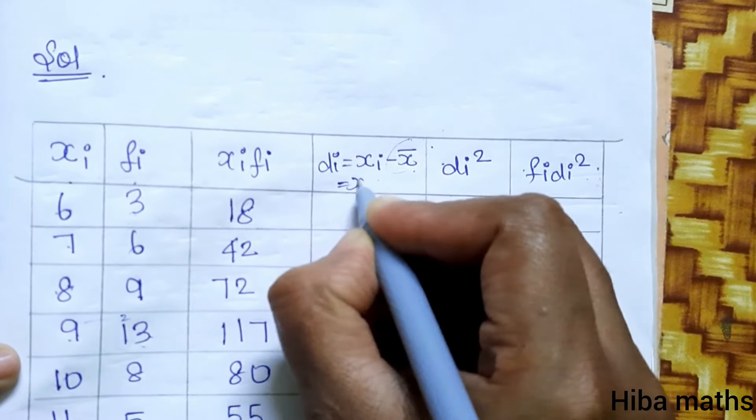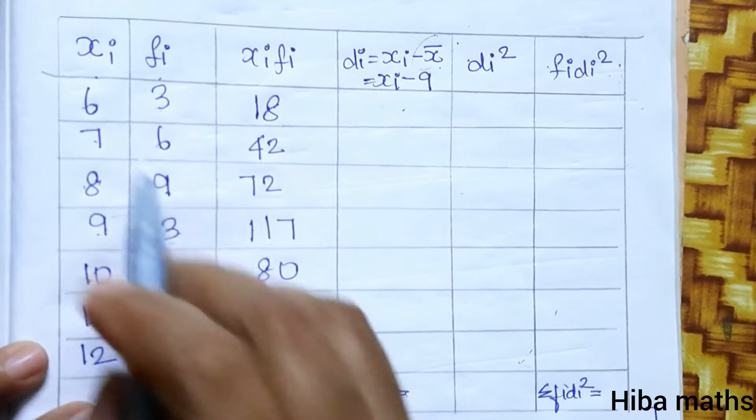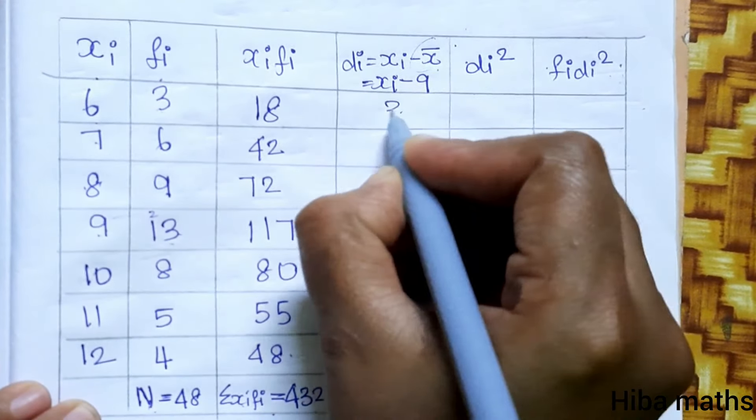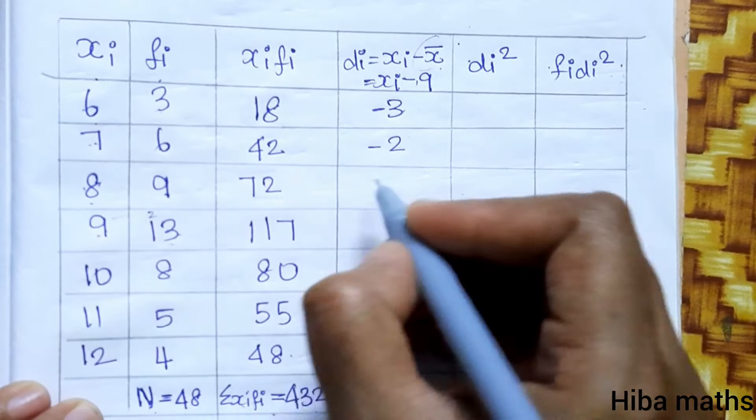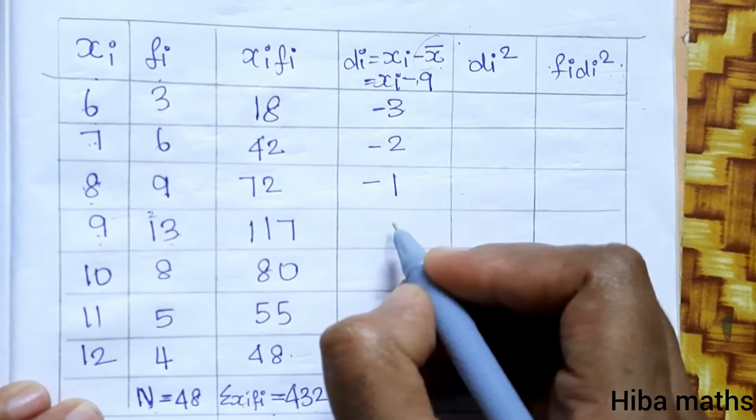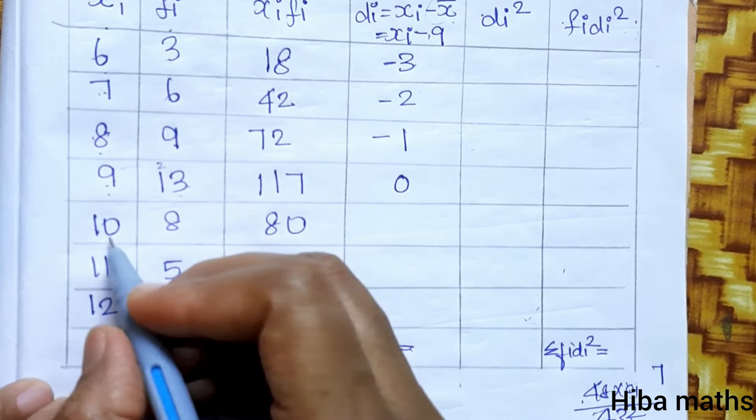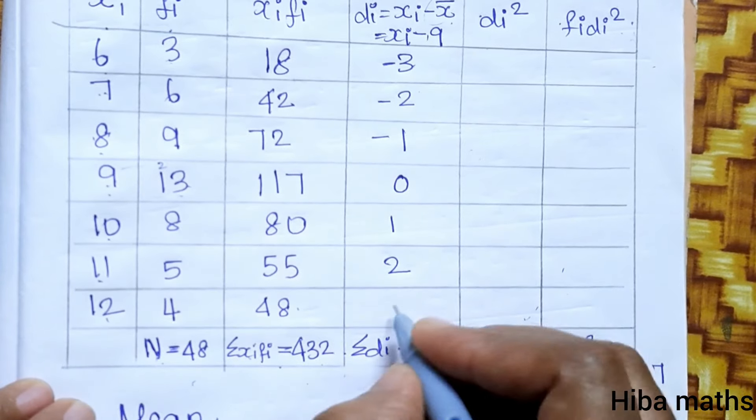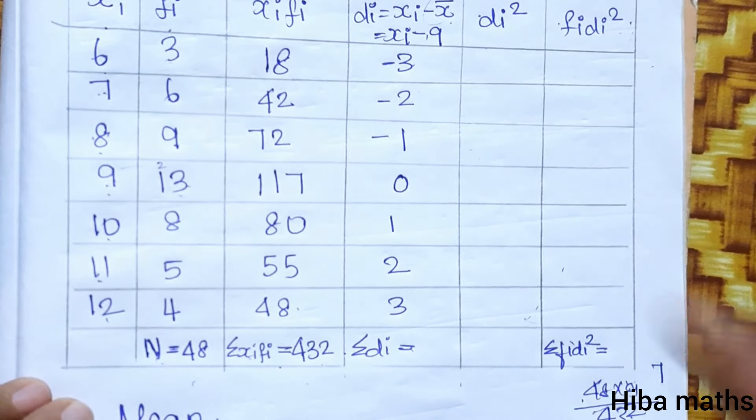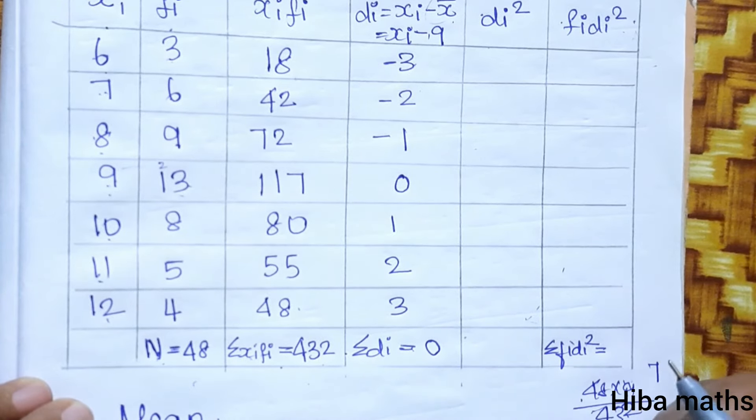For di, we subtract the mean from each xi. Six minus nine equals minus three. Seven minus nine equals minus two. Eight minus nine equals minus one. Nine minus nine equals zero. Ten minus nine equals one. Eleven minus nine equals two. Twelve minus nine equals three. The sum of di values is zero.